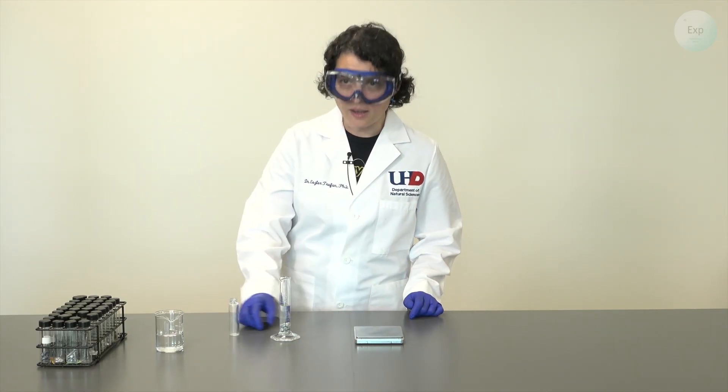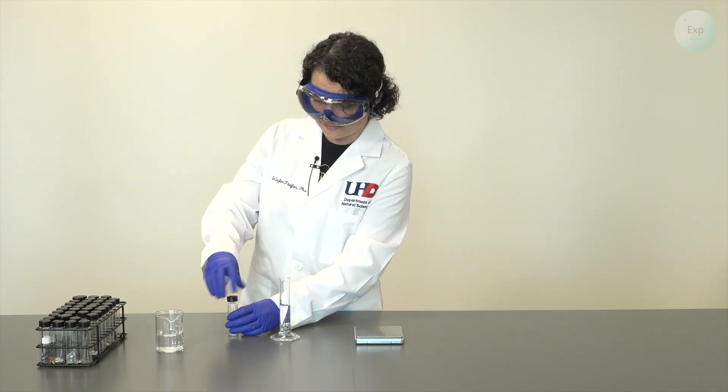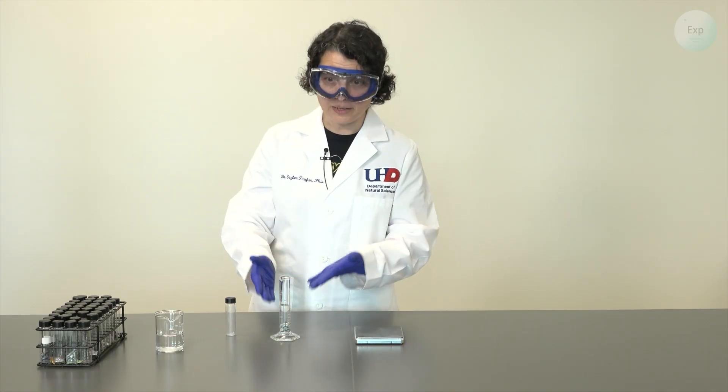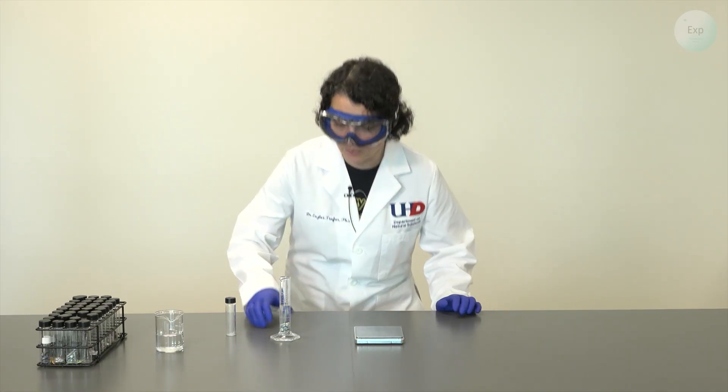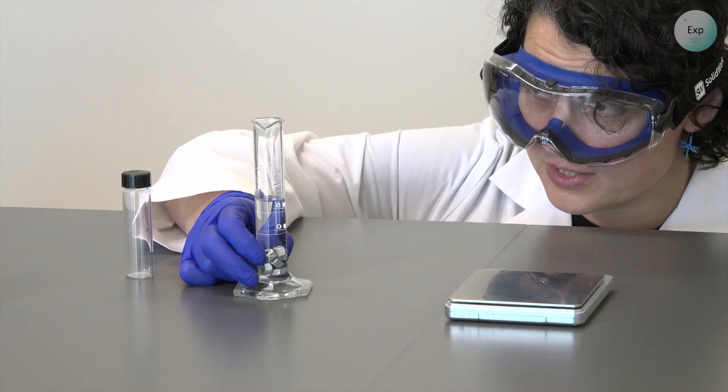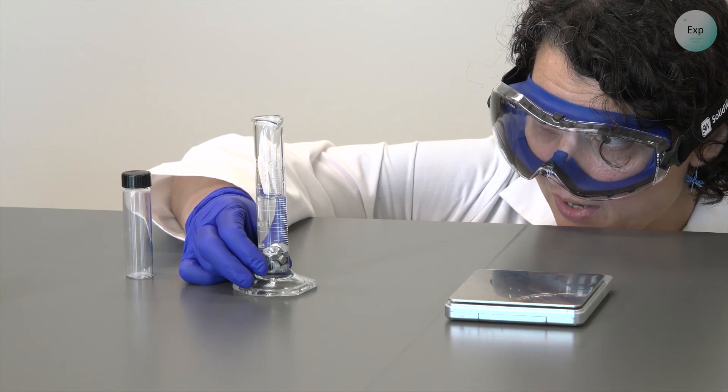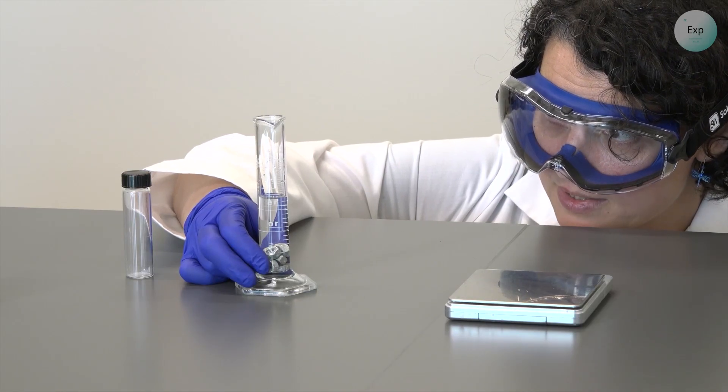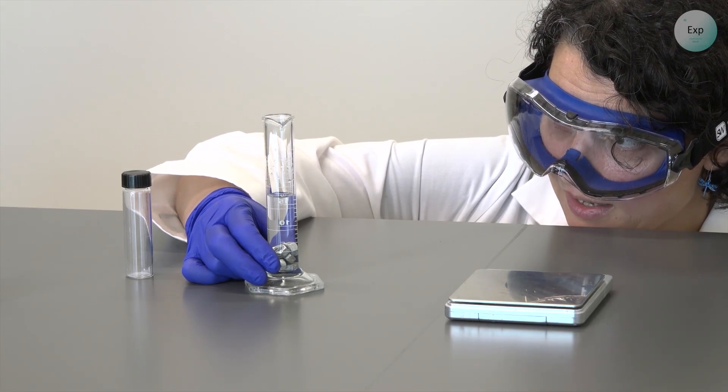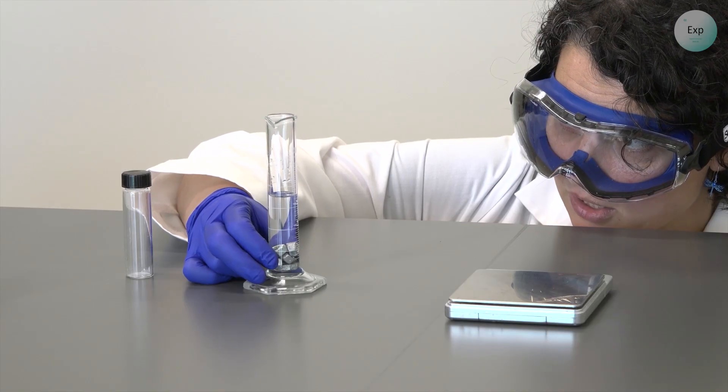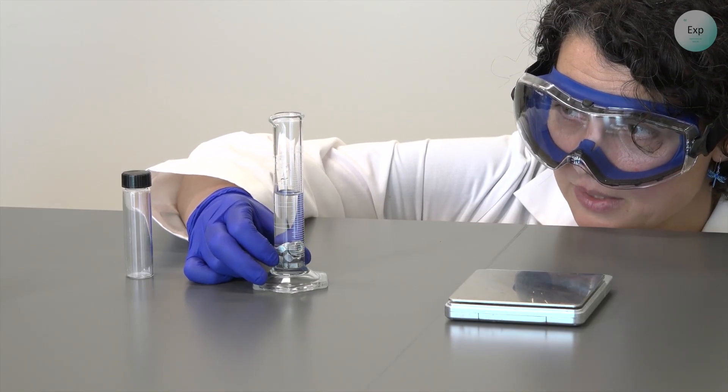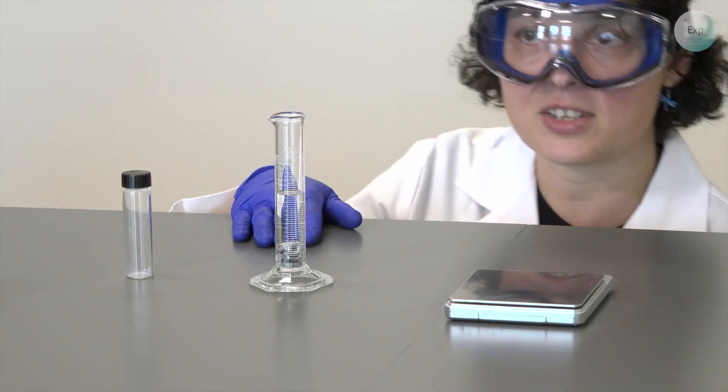Now we record the volume of our mixture. We have our metal pieces inside and then we have our water. We lower ourselves to eye level with our meniscus. We find that our volume is between 17 and 18. It seems to be close to the middle of that so we are going to say it is 17.5.